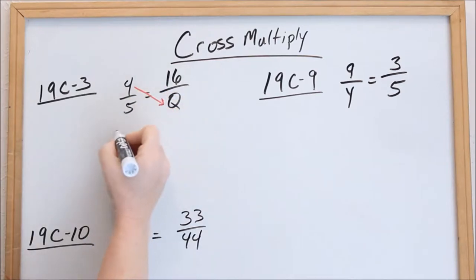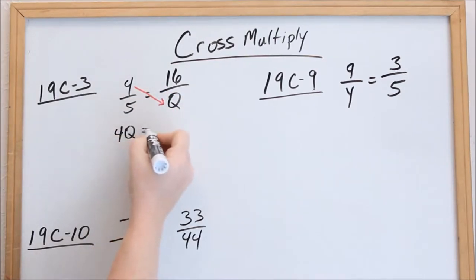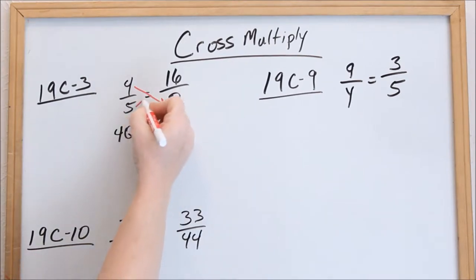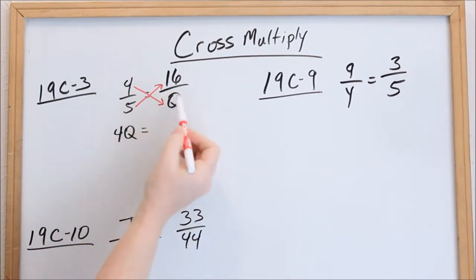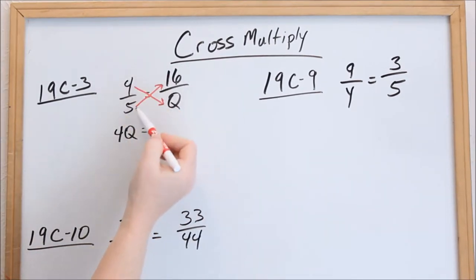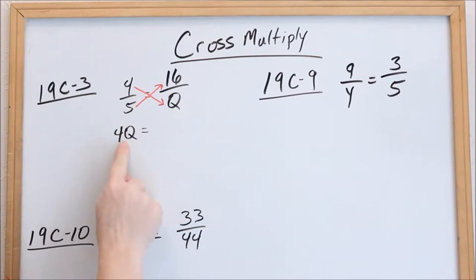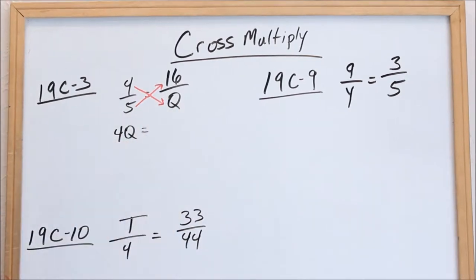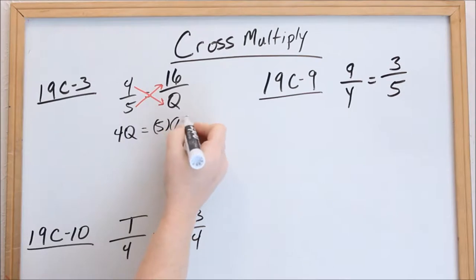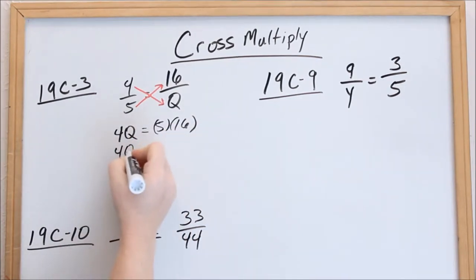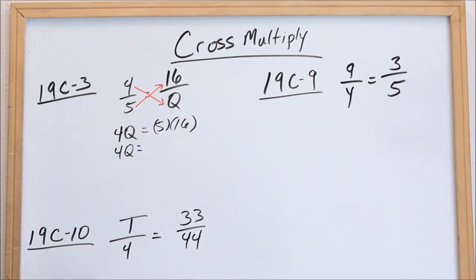So, four times q is 4q — that's on one side of the equal sign. Then you take this denominator and multiply it to that denominator. Do you see how we made an x or a cross? So, 4q set equal to 5 times 16. Using my calculator, 5 times 16 is 80.